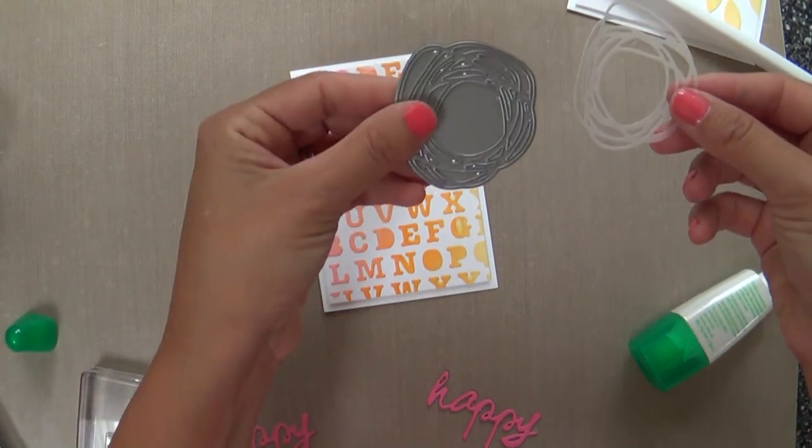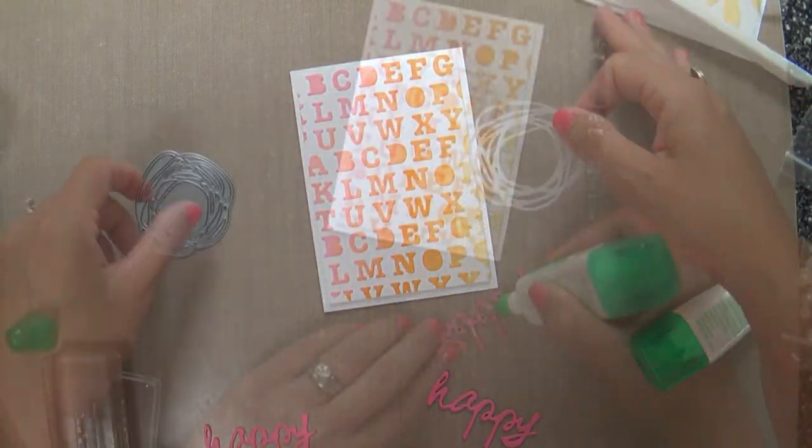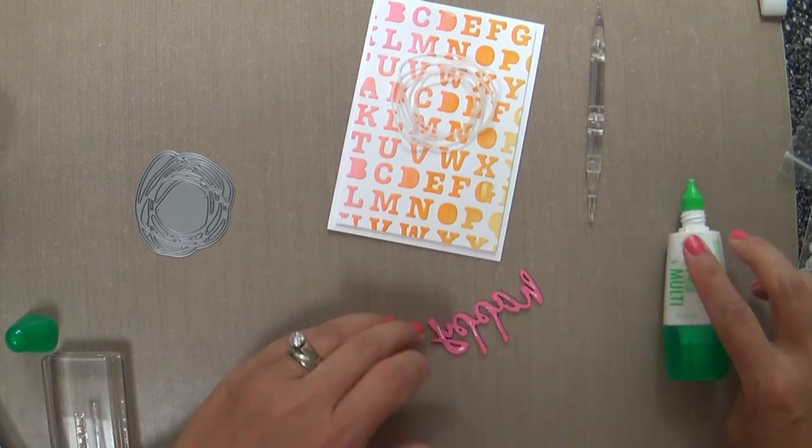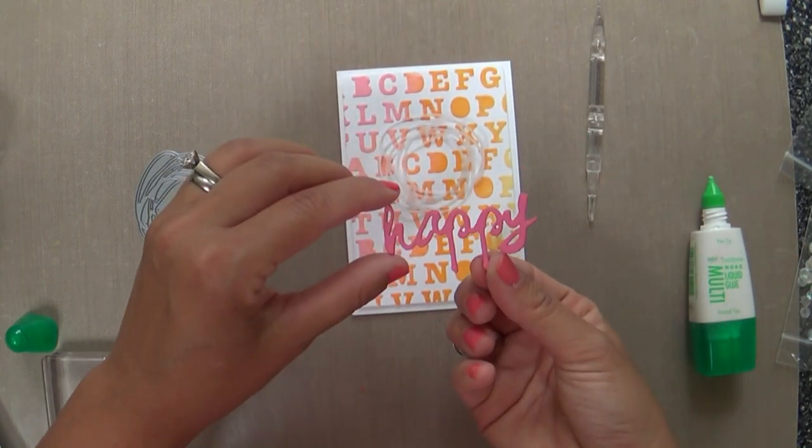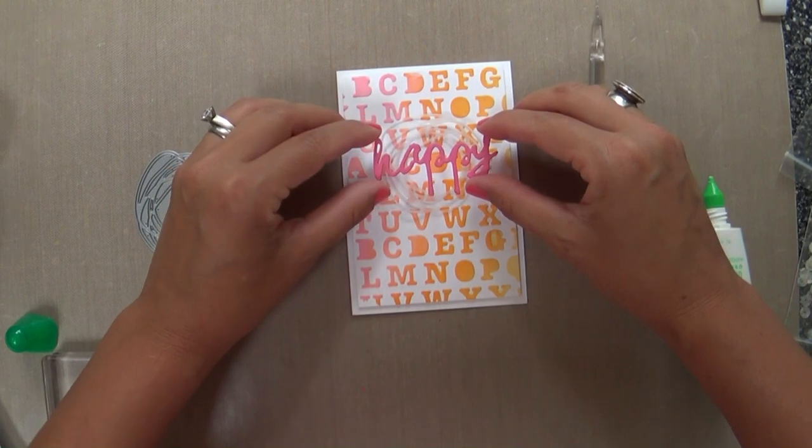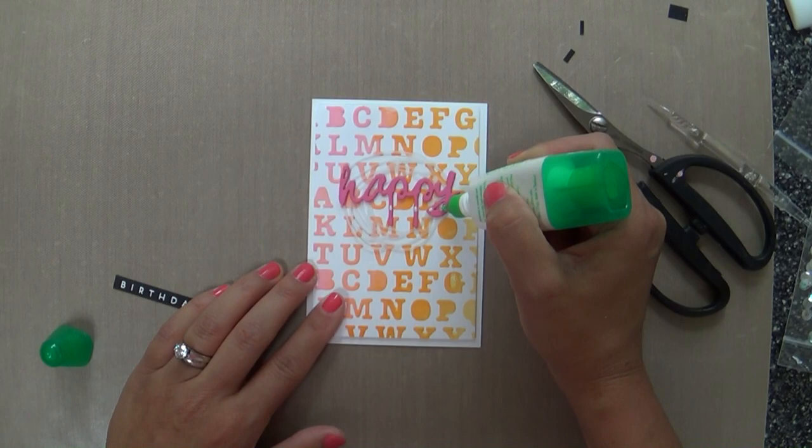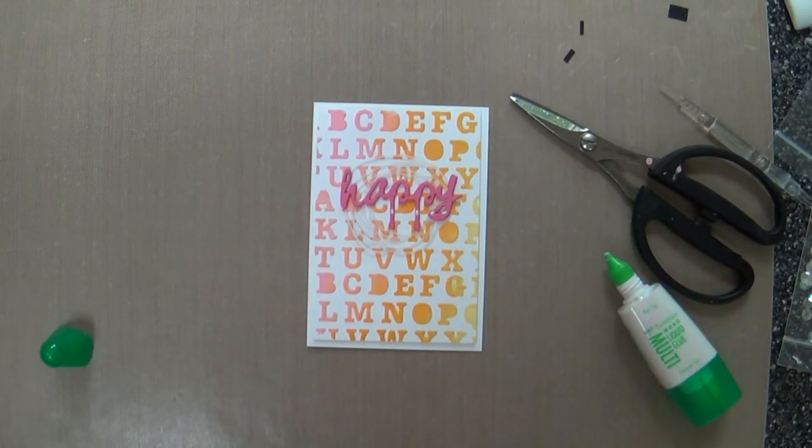Okay so for this one this is a smaller card, it's three and a half by five. I used that circle scribbles die and I die cut a piece of vellum. You know how people like to do the loosey-goosey loops of thread. I love to do that behind my sentiment. Sometimes in the middle of a card I'll do some loose thread. Well this kind of gives that same look only I die cut it with that vellum the circle scribbles die.